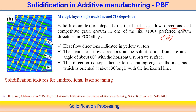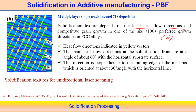If solidification texture depends on heat flow direction, then competitive growth occurs along the ⟨100⟩ preferred growth direction. At some point there may be deviations — for example, in bidirectional scanning. In the figure, the heat flow direction is indicated by the yellow vector, and the solidification front makes an angle of around 60 degrees.